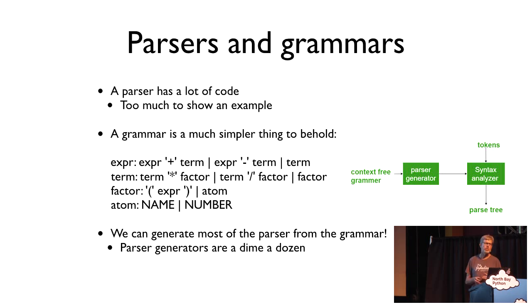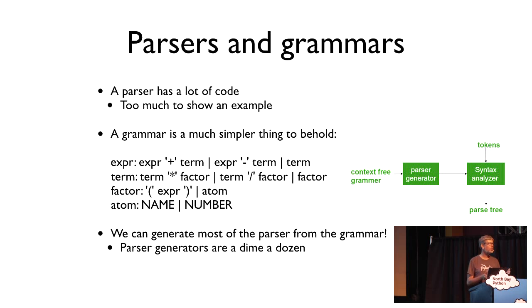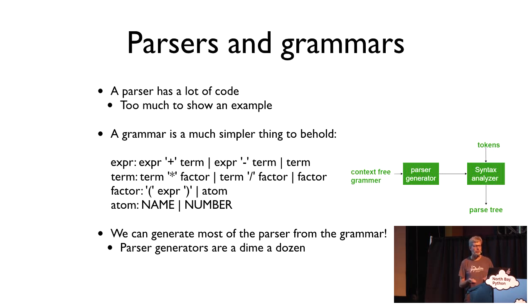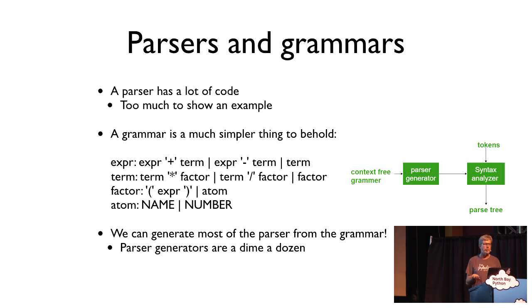Parsers and grammars are closely related, but of course they're different. The parser is code — it has a lot of code. A grammar, on the other hand, is a relatively simple thing. Here is a grammar that describes very simple arithmetic expressions: you can add, subtract, multiply, and divide, and even put things in parentheses. And it's all four lines, corresponding to maybe 50 to 100 lines of code.